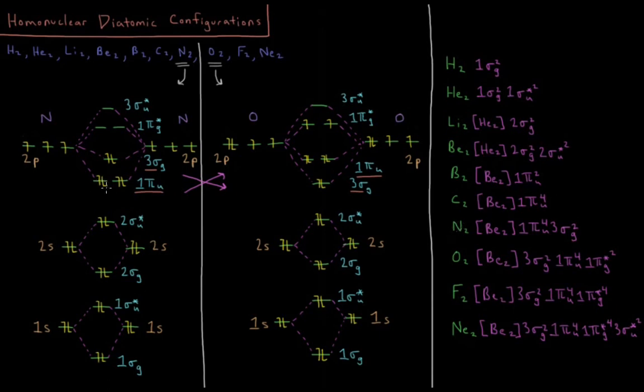N2 is the last one that we'll have on this diagram, which is what I have drawn in here. Three electrons each from the 2p level, filling up four electrons in 1πiu, and two in 3sσg.